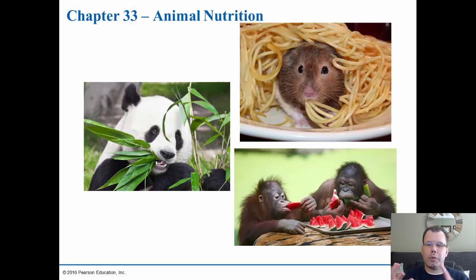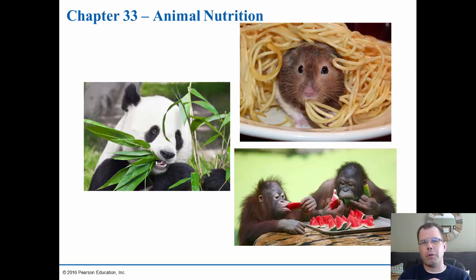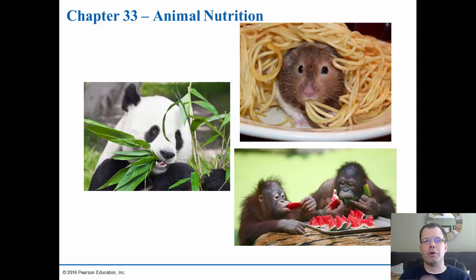What separates animals from plants and other organisms like fungi is that animals are heterotrophs — meaning they have to eat. We have developed adaptations for eating, which we looked at in chapter 27 when we examined predation and the production of jaws and teeth. Animals also do internal digestion, which separates them from fungi, which digest externally and absorb through their cell walls. From sponges all the way up to humans, we all have internal digestion.